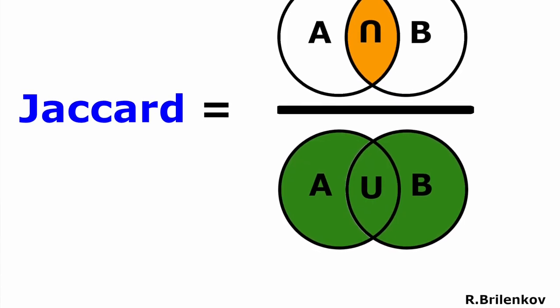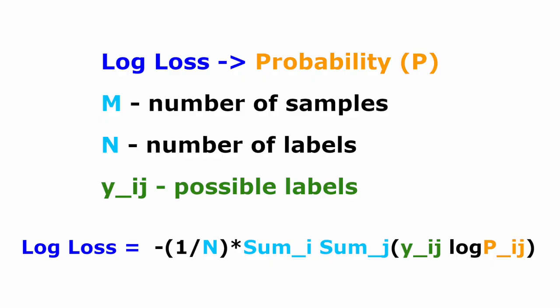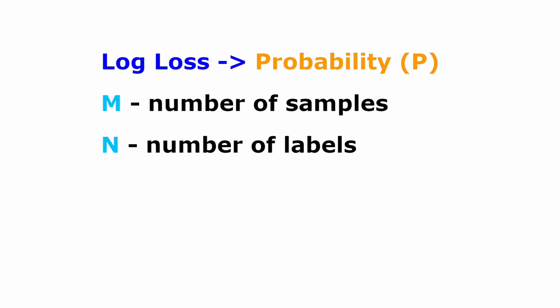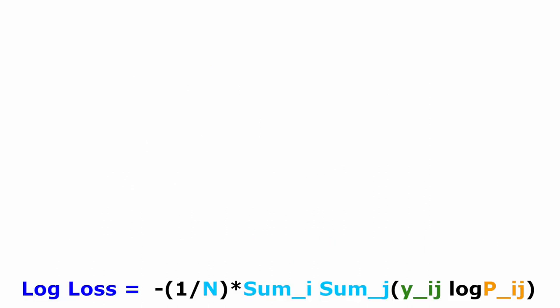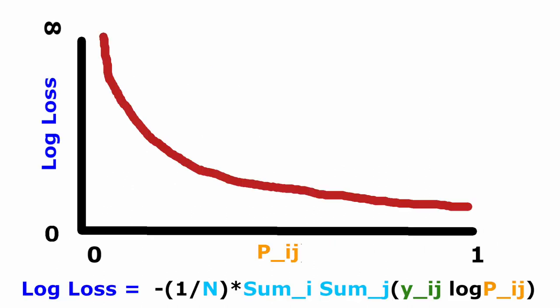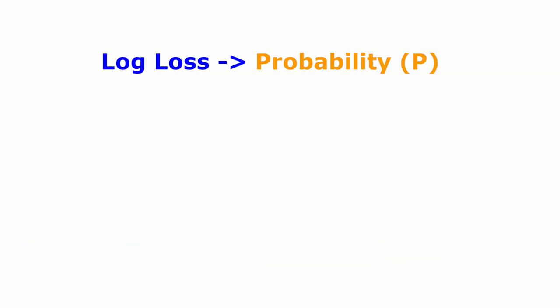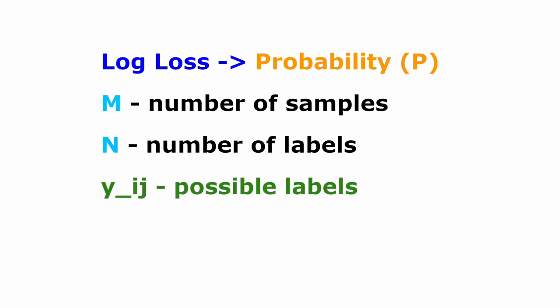And let's move on to the logarithmic loss. Logarithmic loss is such a performance measure that penalizes the incorrect or false classifications. Here is an example, as you can see. It is impossible to calculate the log loss for a classifier without assigning a probability to each class, in contrast to simply outputting the most likely class. Log loss varies from 0 to infinity.